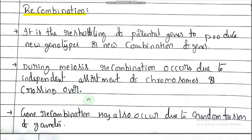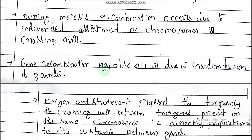During meiosis, recombination occurs due to independent assortment of chromosomes or crossing over. Gene recombination may also occur due to random fusion of gametes — when fusion of gametes takes place, mixing occurs, and that is how gene recombination takes place.